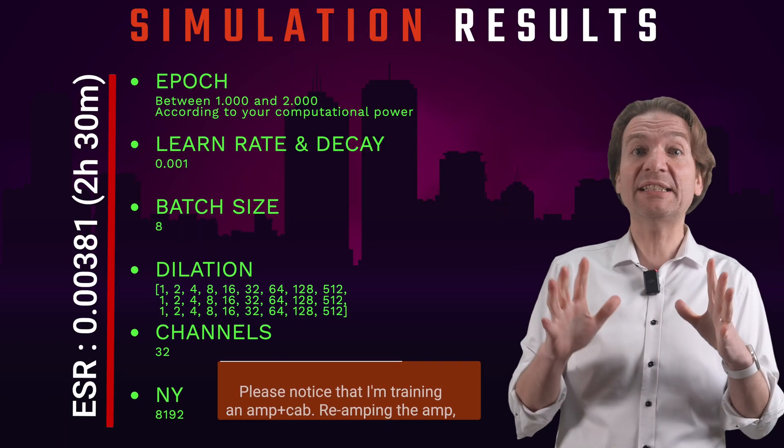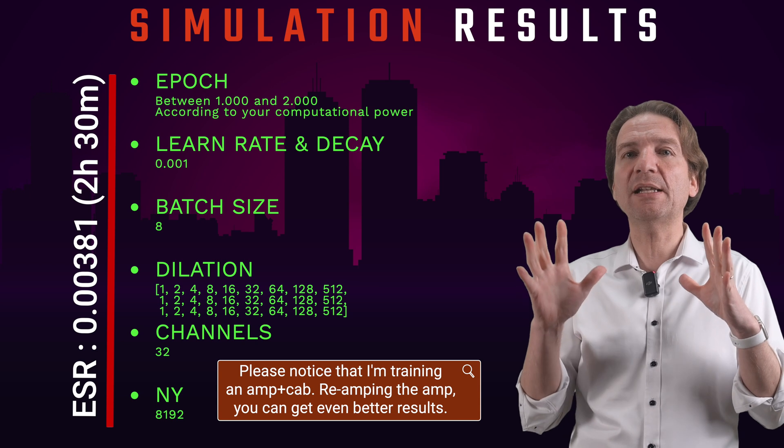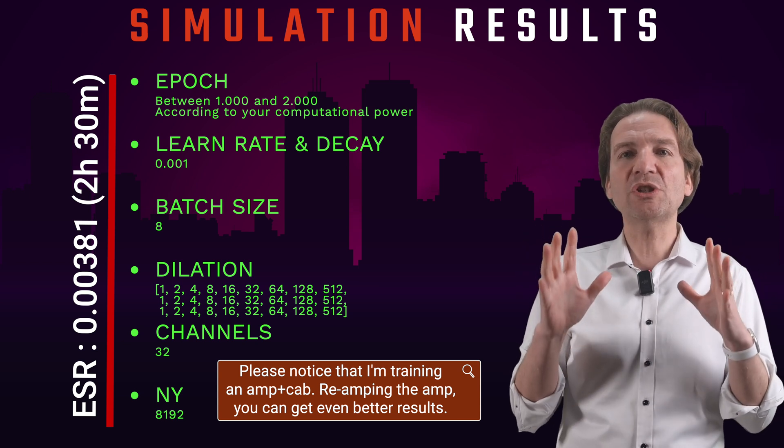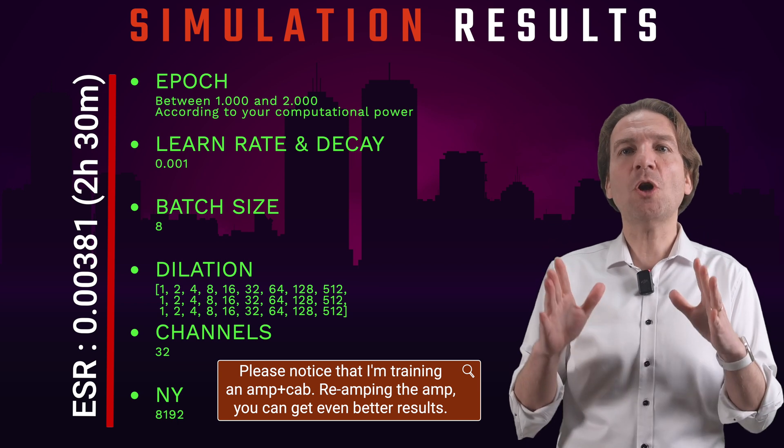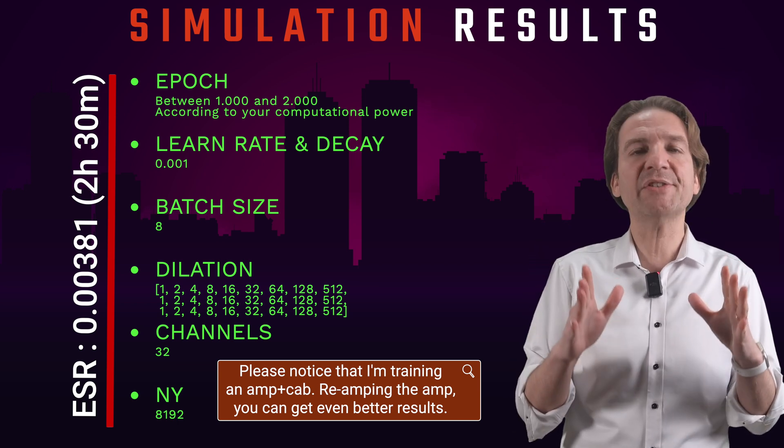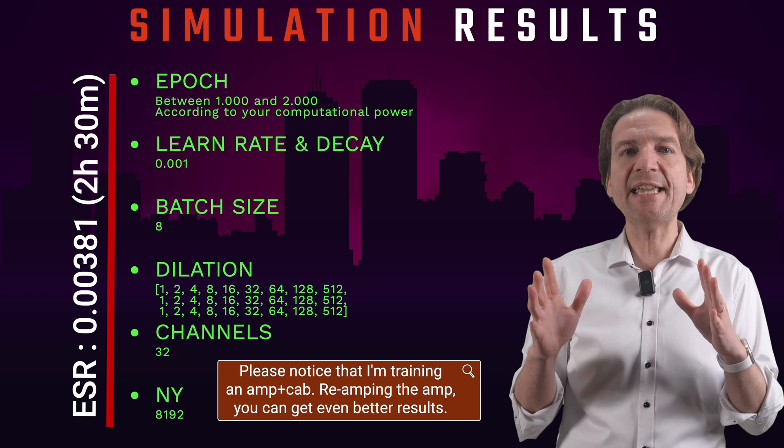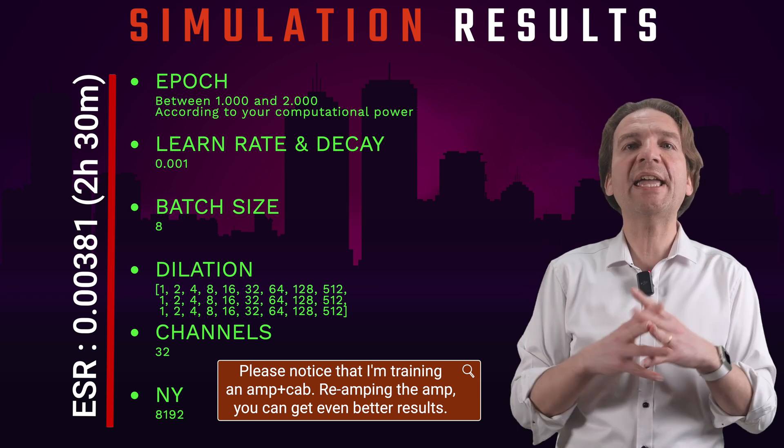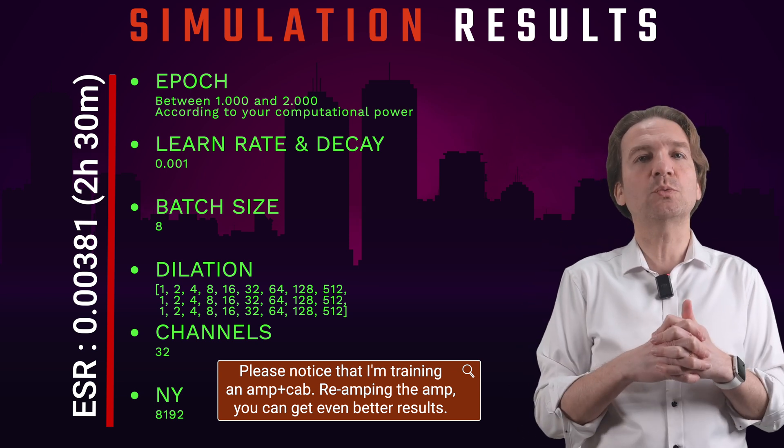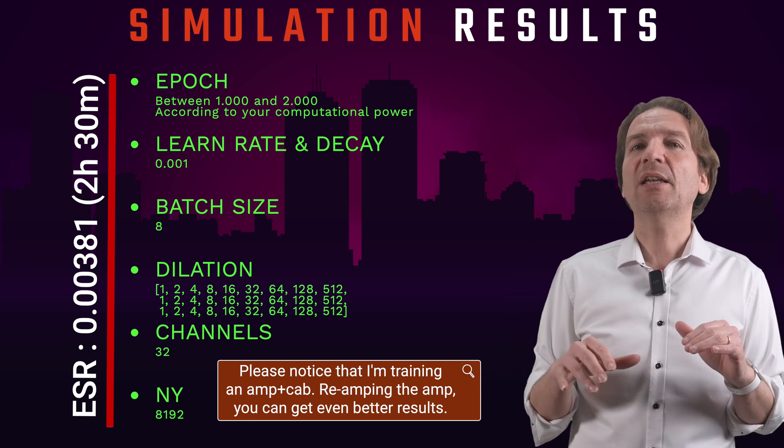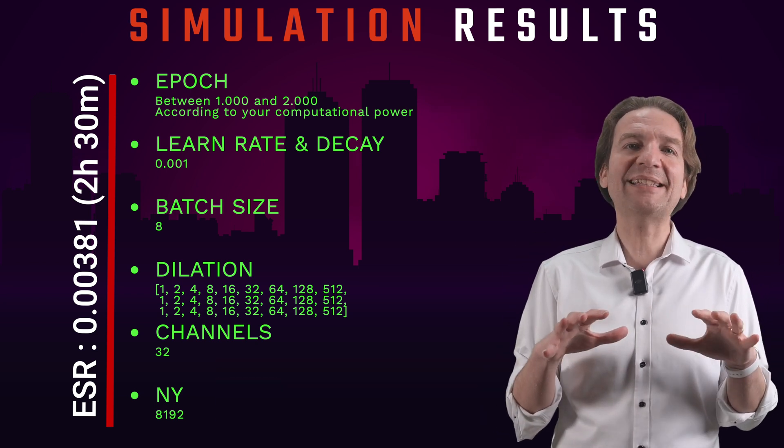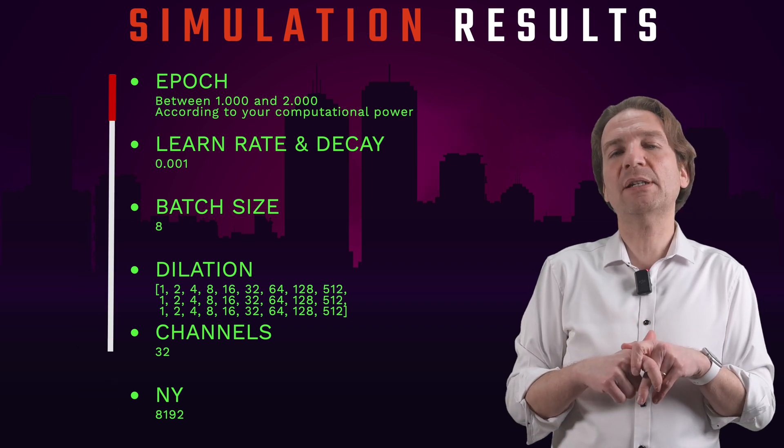So at the end, I would say that the best settings were with the learning rate set to 0.001, 32 channels, a dilation of three set of layers, a batch size of eight and the NY set to 8192. Pretty cool. Here I'm obtaining a good increase in ESR without getting crazy with the computational time.